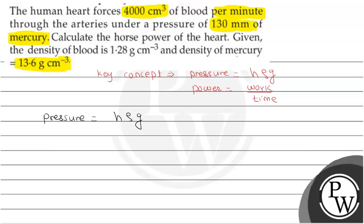Pressure equals h·rho·g, where h is the height in meters: 130 mm of Hg is equal to 0.13 m. Density is 1.28 into 10 raised to 3 kg per meter cube, and g is 9.8. The standard calculation gives pressure equal to 1.63 into 10 raised to 3 Pascal.